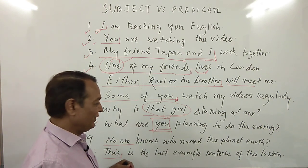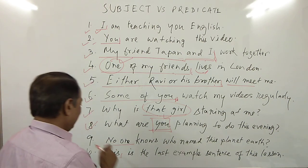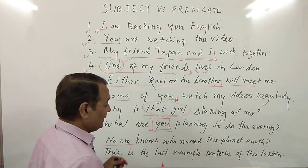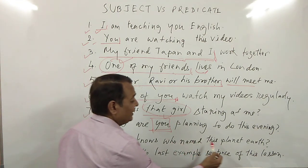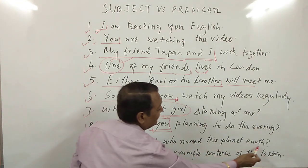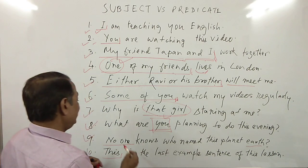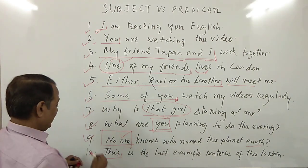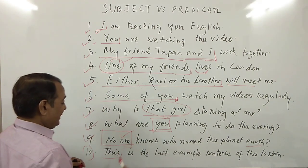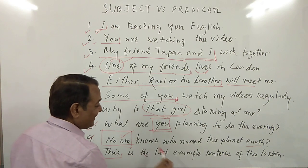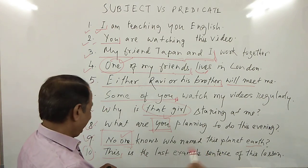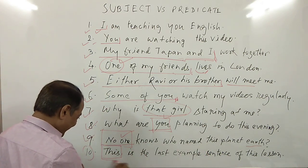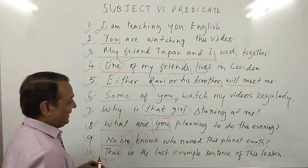Number nine: 'No one knows who named this planet Earth.' Here in this sentence, 'no one' is the subject. Number ten is the last example sentence. Here, the word 'this' is the subject.